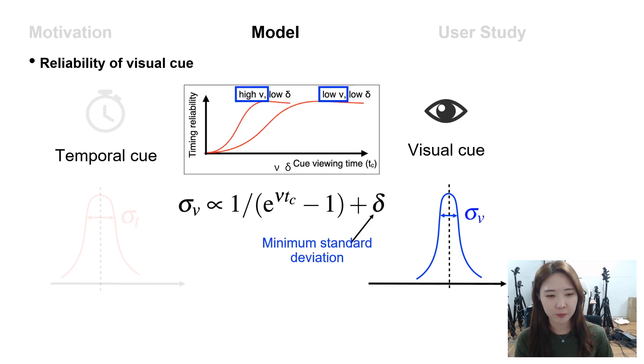So the delta represents the user's upper bound of the precision. If the delta value is very low, the maximum reliability that the user can achieve will be increased.